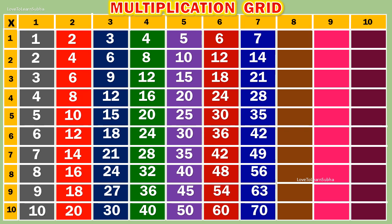Table of 8. 8 1s are 8. 8 2s are 16. 8 3s are 24. 8 4s are 32. 8 5s are 40.